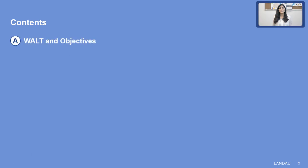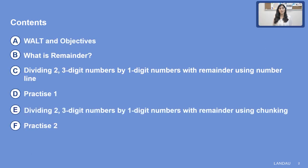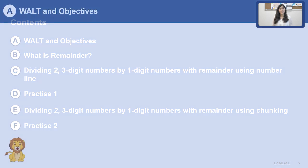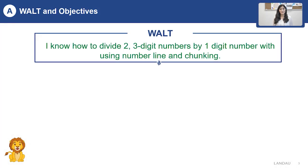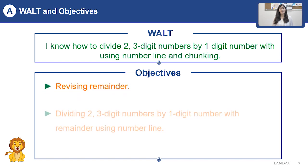Today our contents page is: world and objectives — revising remainder and learning how to divide two and three digit numbers by one digit numbers with remainder. Our today's goal is: I know how to divide two and three digit numbers by one digit numbers with remainder, using the chunking method and number line method.